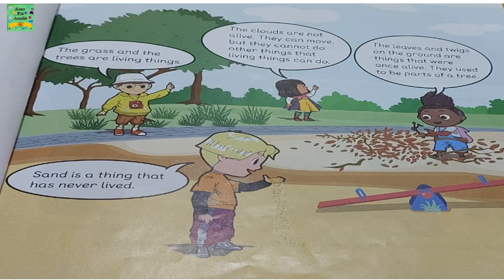The grass and the trees are living things. The sand is a thing that has never lived. The clouds are not alive — they can move, but they cannot do other things that living things can do. The leaves and twigs on the ground are things that were once alive. They used to be parts of a tree.